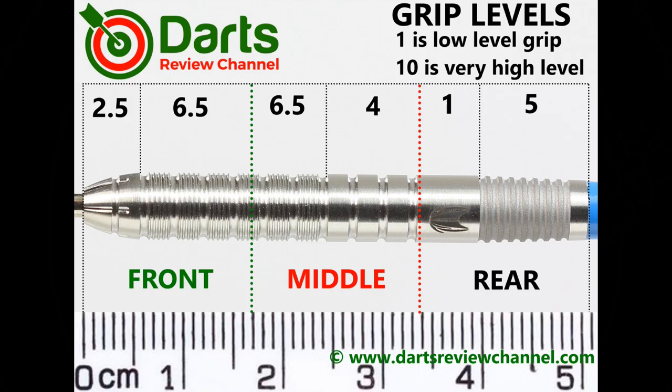So we've got a mix of grip levels here but obviously that front section with the micro grip rings is the grippiest so 6.5 at the most.